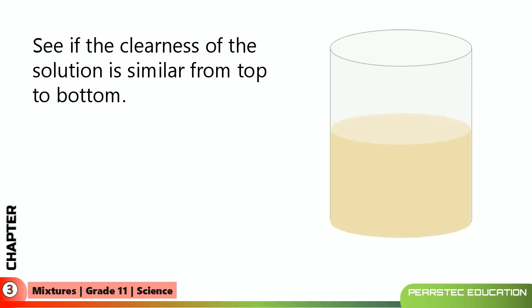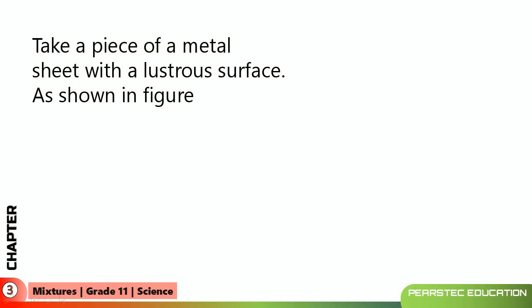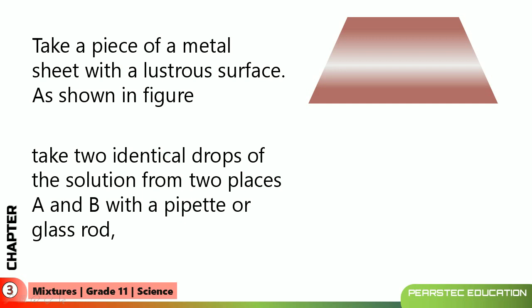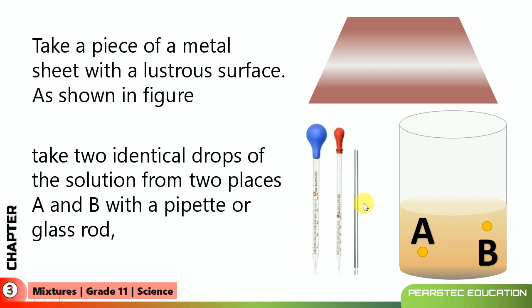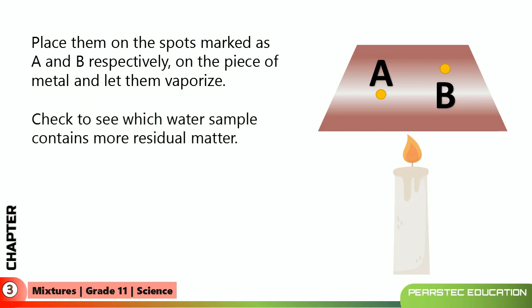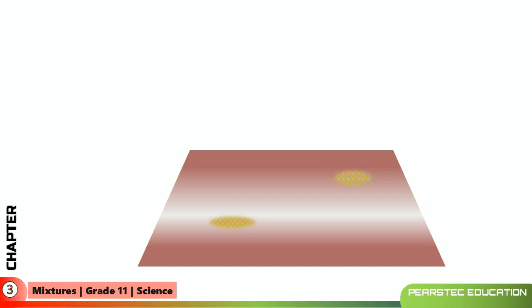When you look at it, it seems very clear with no obvious differences. But looking very closely at what is happening, take a piece of metal sheet with a lustrous surface. Take two identical drops of the solution from two places, A and B, with a glass rod, and put them on the spots marked A and B on the metal sheet. Let them vaporize by heating with a candle — the water will evaporate and the drops will dry. Then check to see which water sample contains more residual matter.